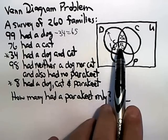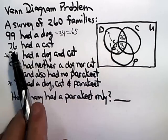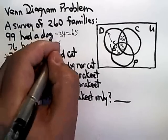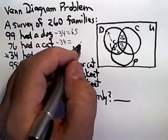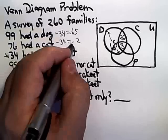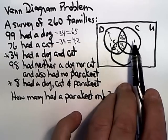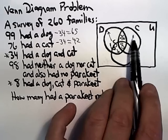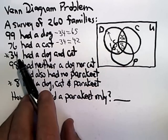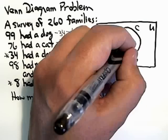I can play that same game with the cats. I've got the same 34 cats, and I need 76 altogether, so if I take those 34 away, I get 42. Now, again, I don't know how many of those 42 cats go in that little part and how many go there,